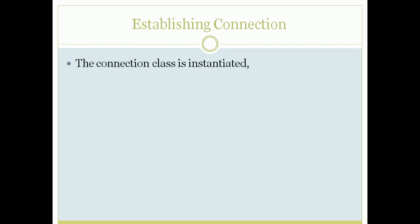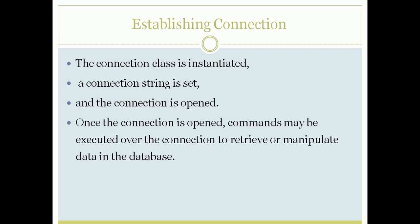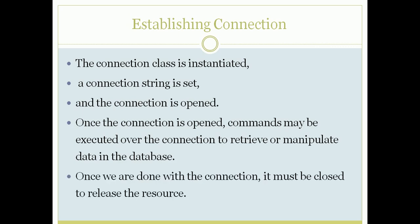Now, how is a connection established? First, you instantiate a connection class — you create an object of the connection class. Then you set a connection string, which is very important. Once the connection string is set, you open the connection. Once the connection is open, you execute different commands to retrieve or manipulate data. Once done with all operations, you close the connection.